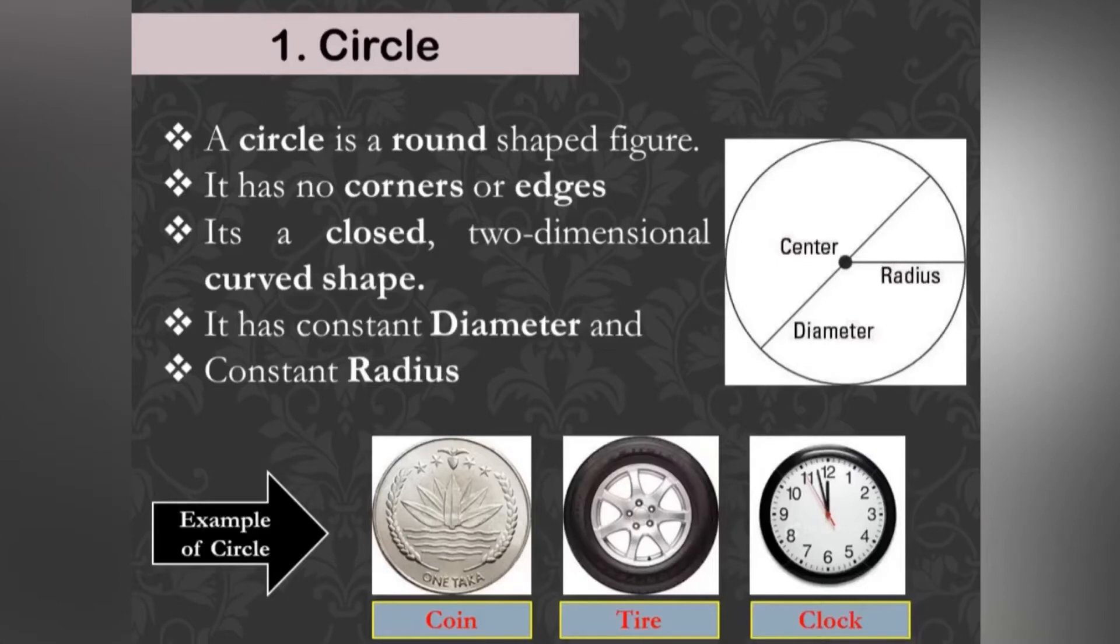Circle: A circle is a round-shaped figure that has no corners or edges. In geometry, a circle can be defined as a closed, 2D curved shape. It has constant diameter and constant radius.